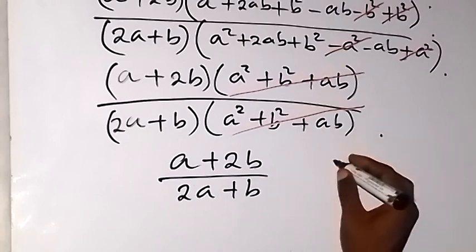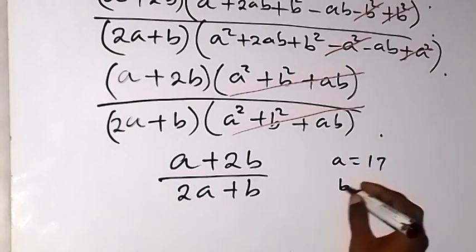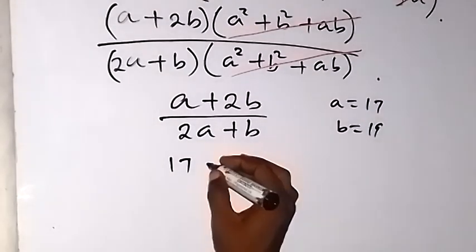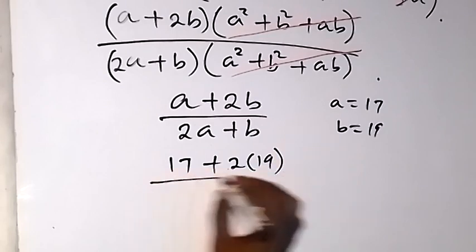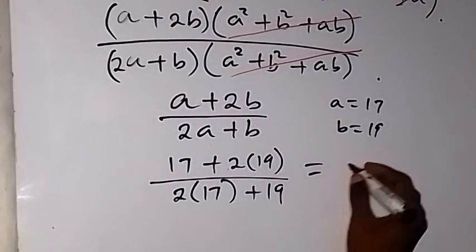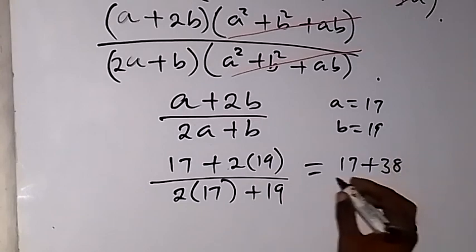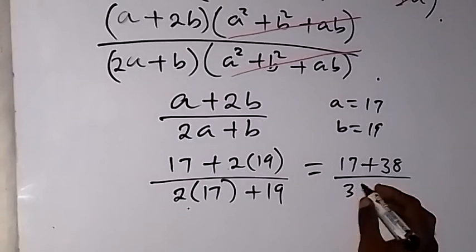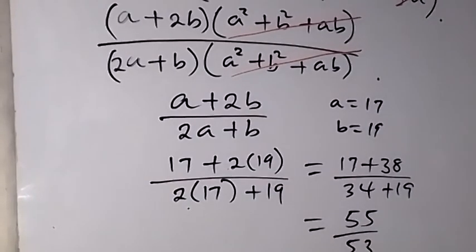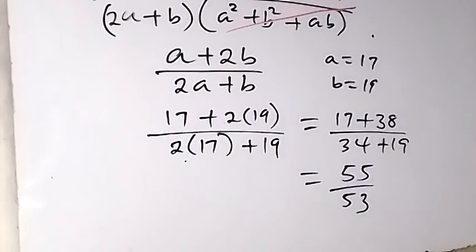Don't forget from the start we said a equals 17 and b equals 19. Substituting, we get 17 plus 2 times 19, divided by 2 times 17 plus 19. That is 17 plus 38, divided by 34 plus 19. Therefore, we have 55 over 53 as our solution. We have come to the end of this problem. Thank you for joining us — don't forget to subscribe to this channel for more of our videos. See you in the next class, bye for now.